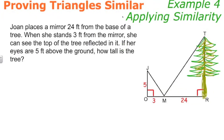Example 4, we're going to be applying similarity some more. Here we're given a word problem. It says, Joan places a mirror 24 feet from the base of a tree. When she stands 3 feet from the mirror, she can see the top of the tree reflected in it. If her eyes are 5 feet above the ground, how tall is the tree? You can see here, I've got a diagram. And in this diagram, I've got the tree over here, labeled with this right triangle, TMR.